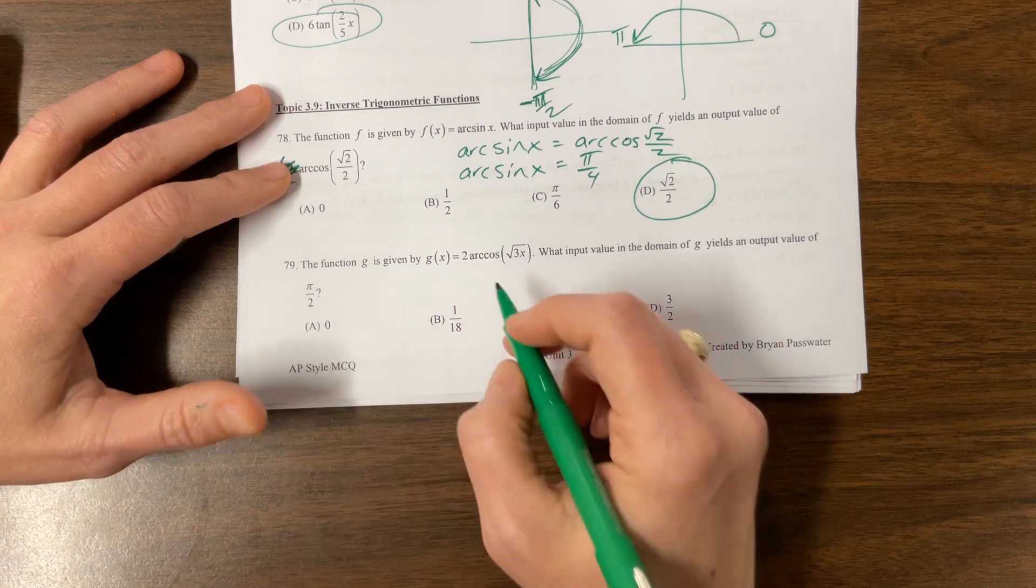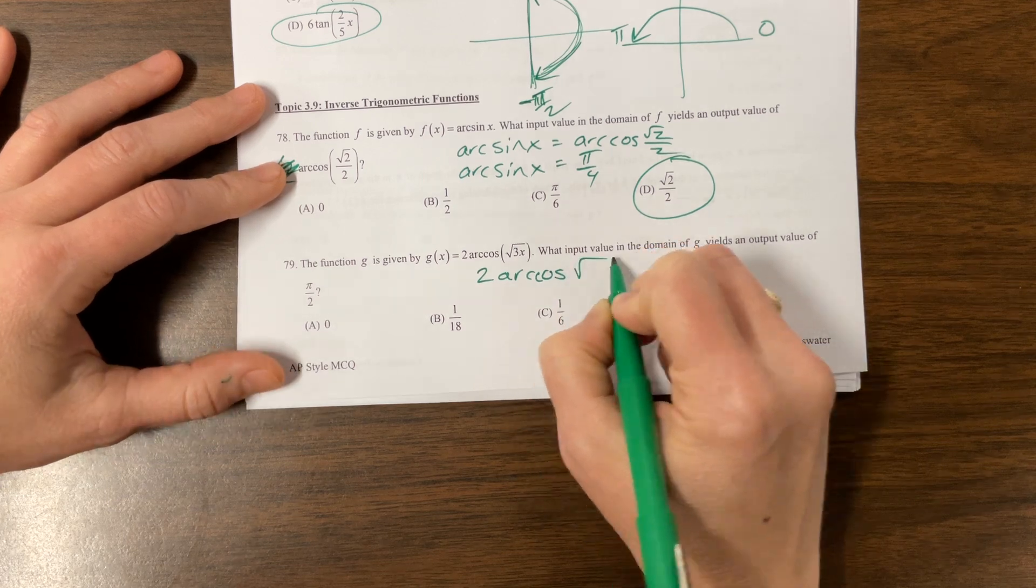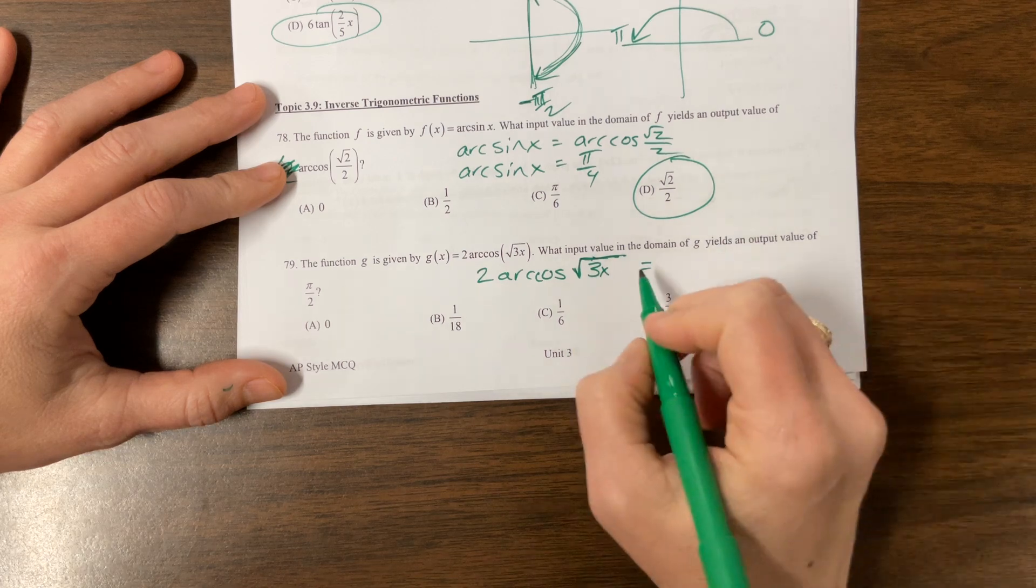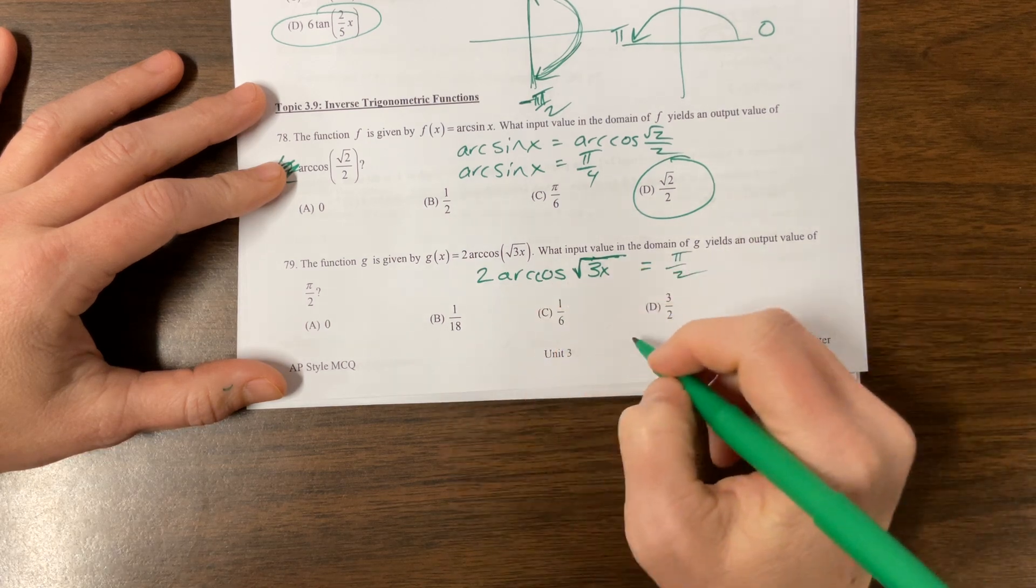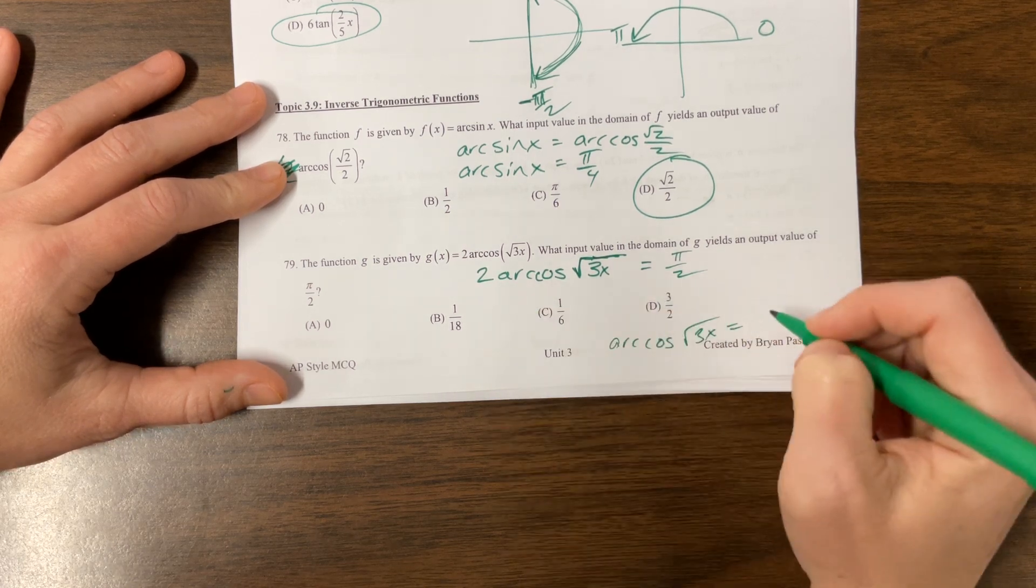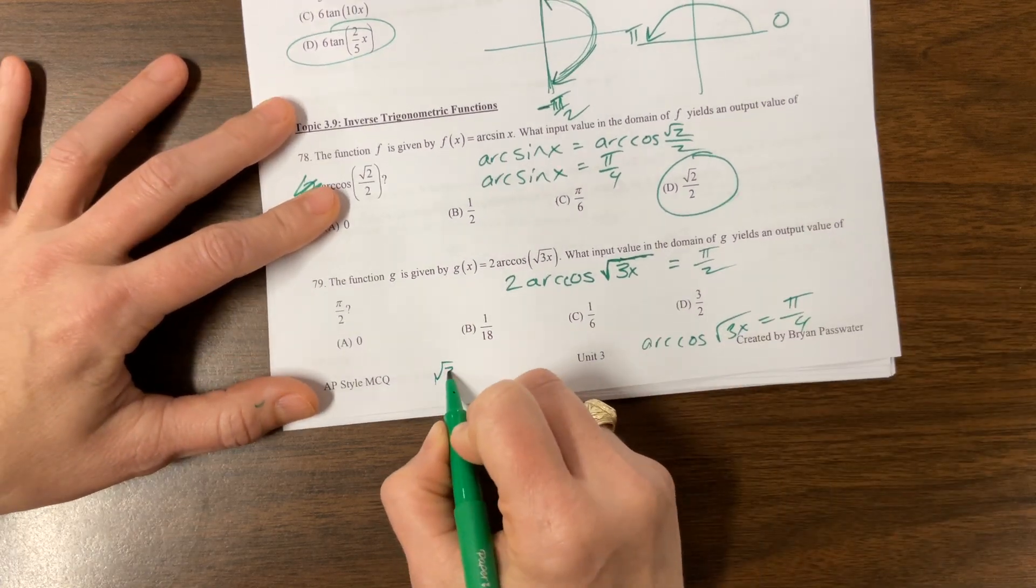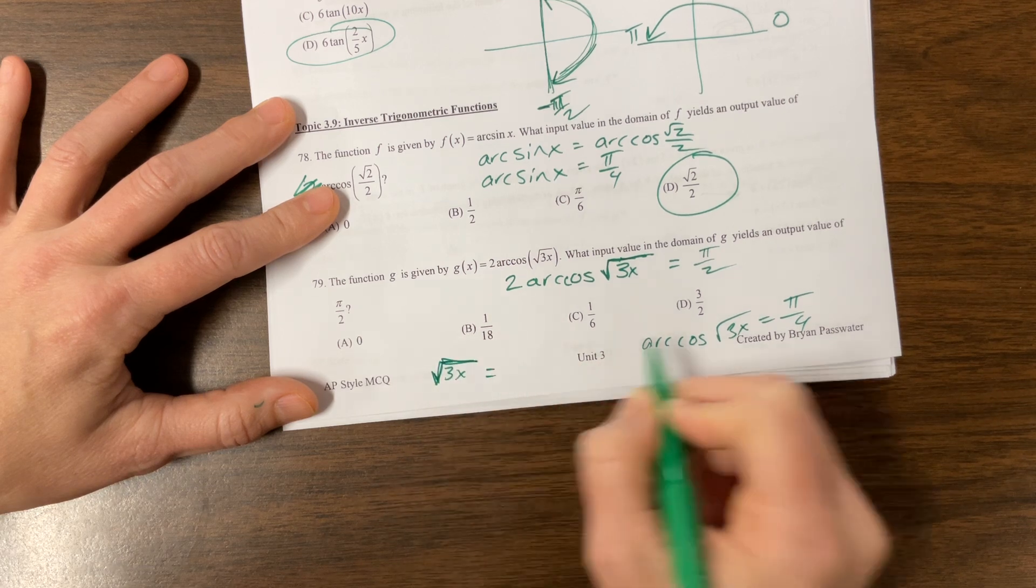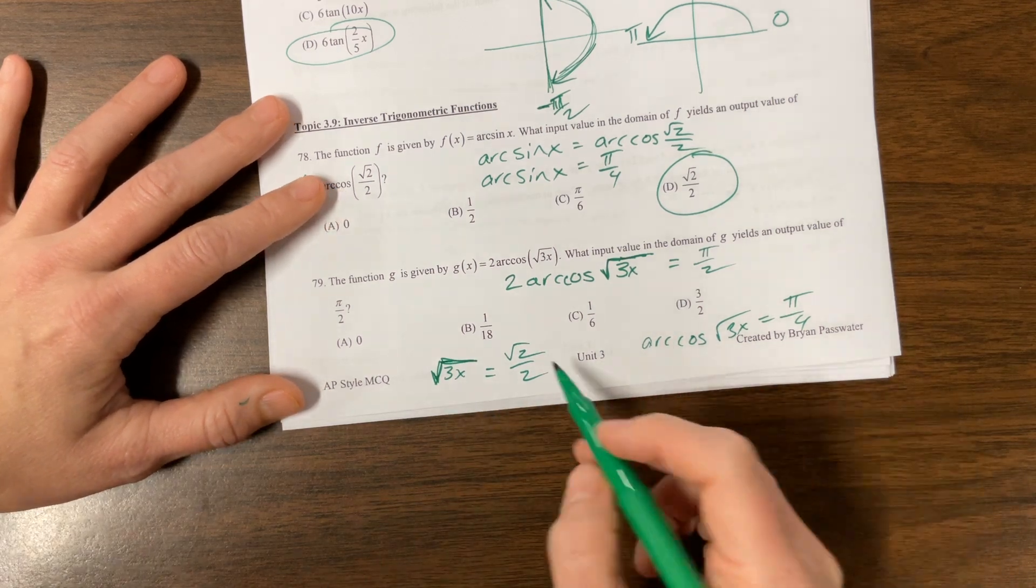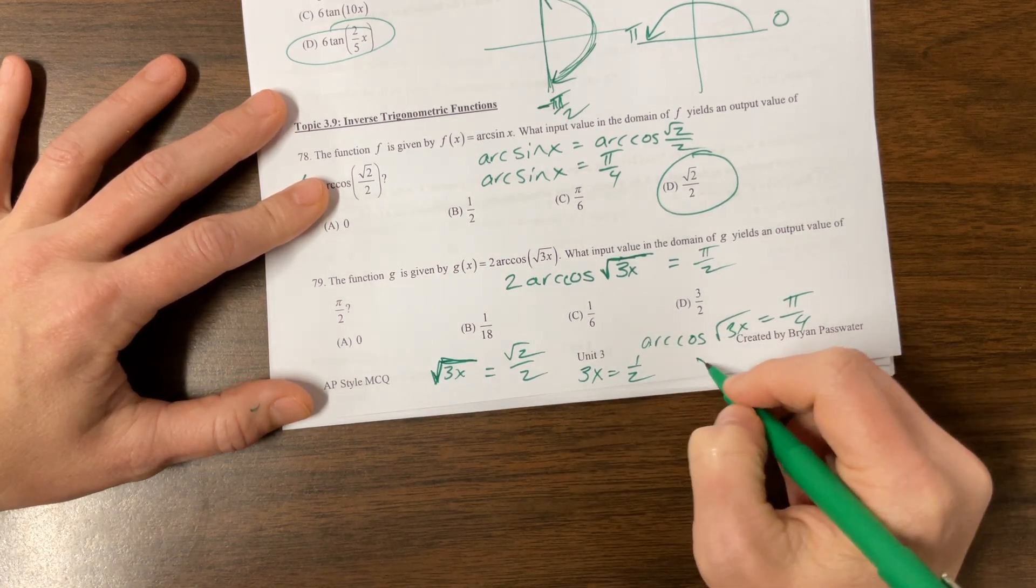What input value gives an output value of that? So two arc cosine, root 3 x is underneath the radical, is equal to, yields an output value of pi over 2. I'm going to divide by 2 and get arc cosine of root 3 x is equal to half of pi over 2 is pi over 4. Take the cosine of both sides. And I am out of space, but I have root 3 x is equal to cosine of pi over 4 is root 2 over 2. So now I'm going to square both sides, which gives me 2 over 4, which is 1 half. So now I have 3 x is equal to 1 half. When I divide by 3, I get 1 sixth.